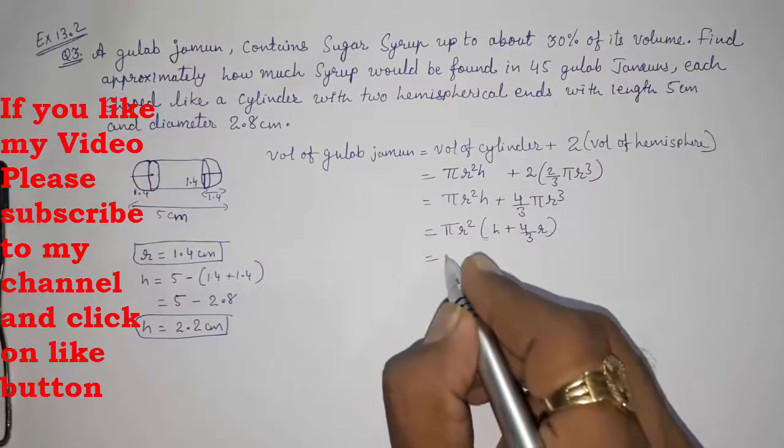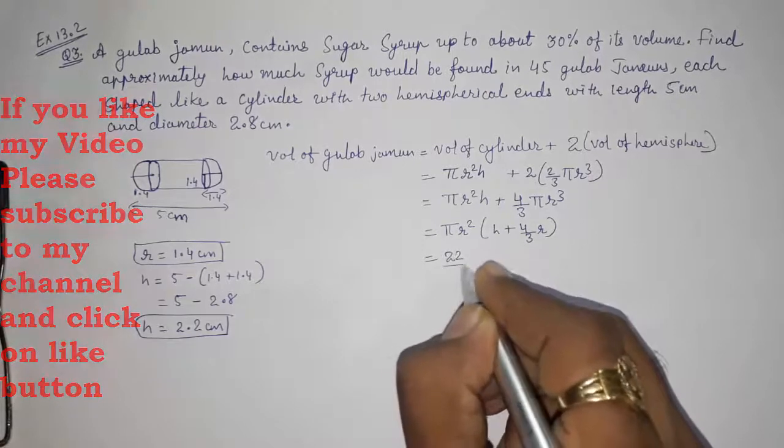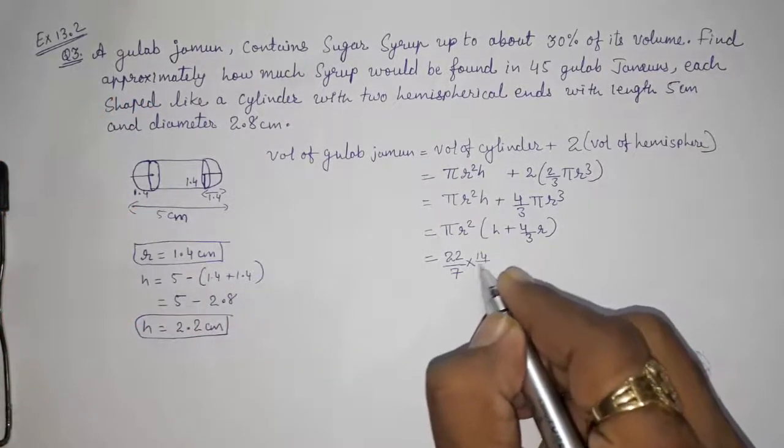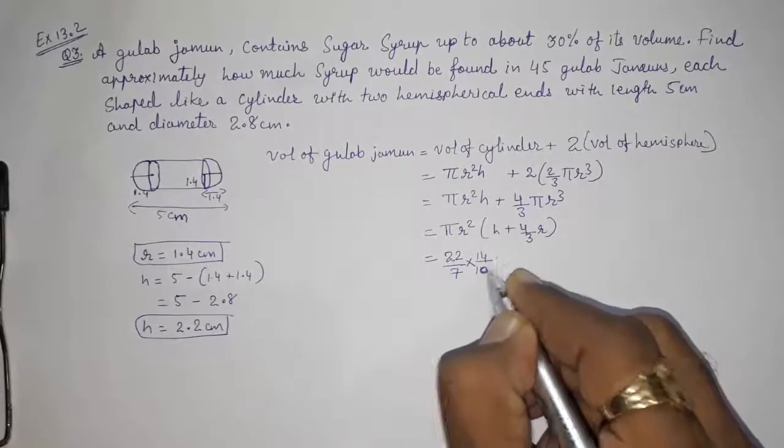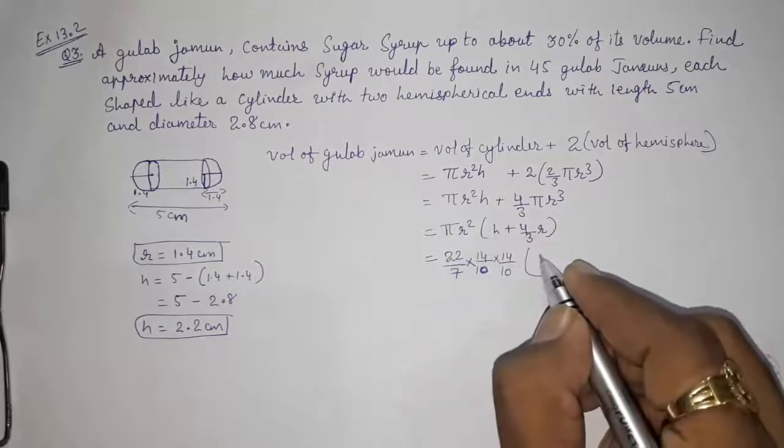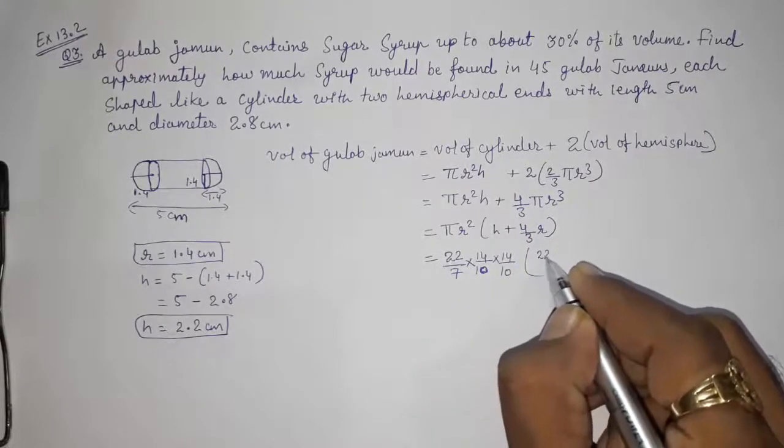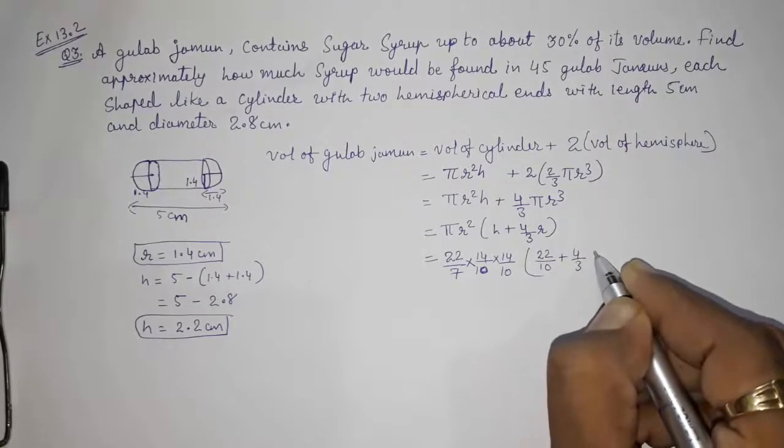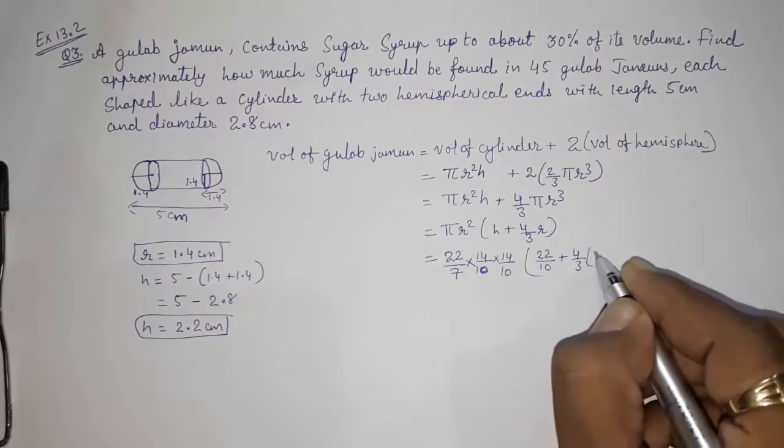We don't have the value of π, so we are going to take 22/7. At radius, we are having 14/10 into 14/10. This is the first part. For h, we are having 22/10 plus 4/3 into radius that is 14/10.